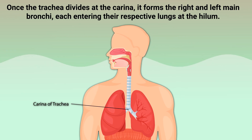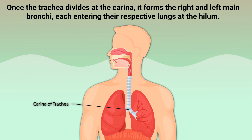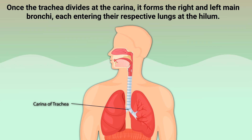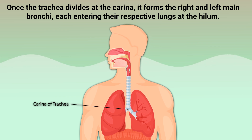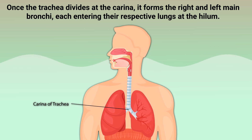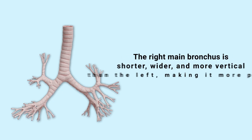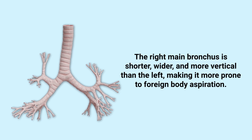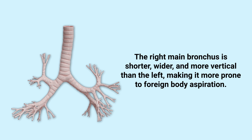Once the trachea divides at the carina, it forms the right and left main bronchi, each entering their respective lungs at the hilum. The right main bronchus is shorter, wider, and more vertical than the left, making it more prone to foreign body aspiration.